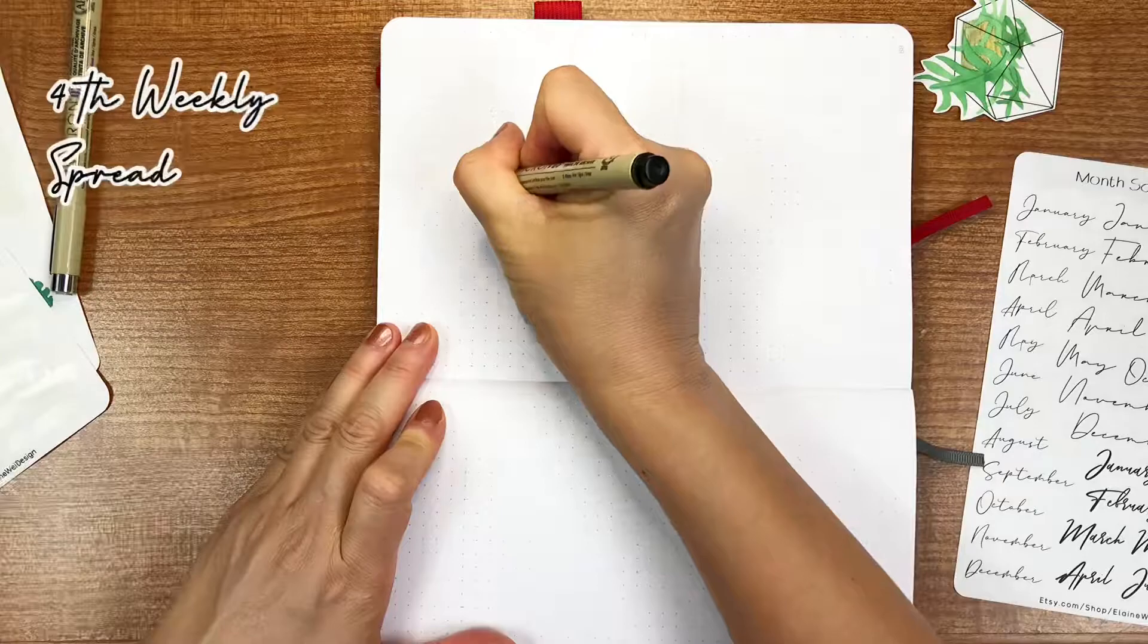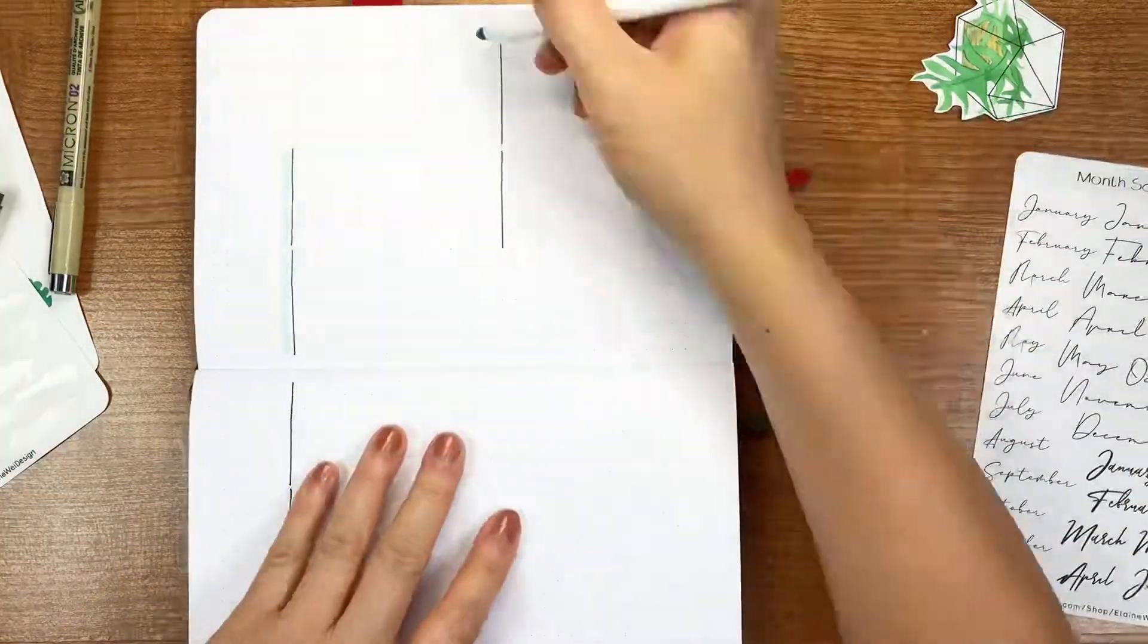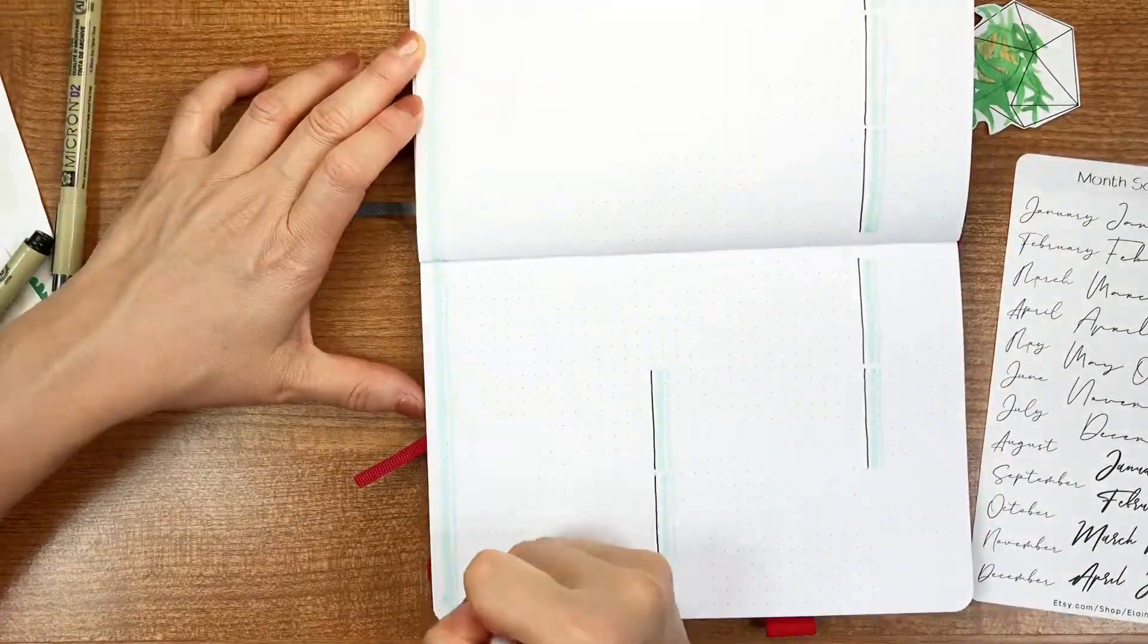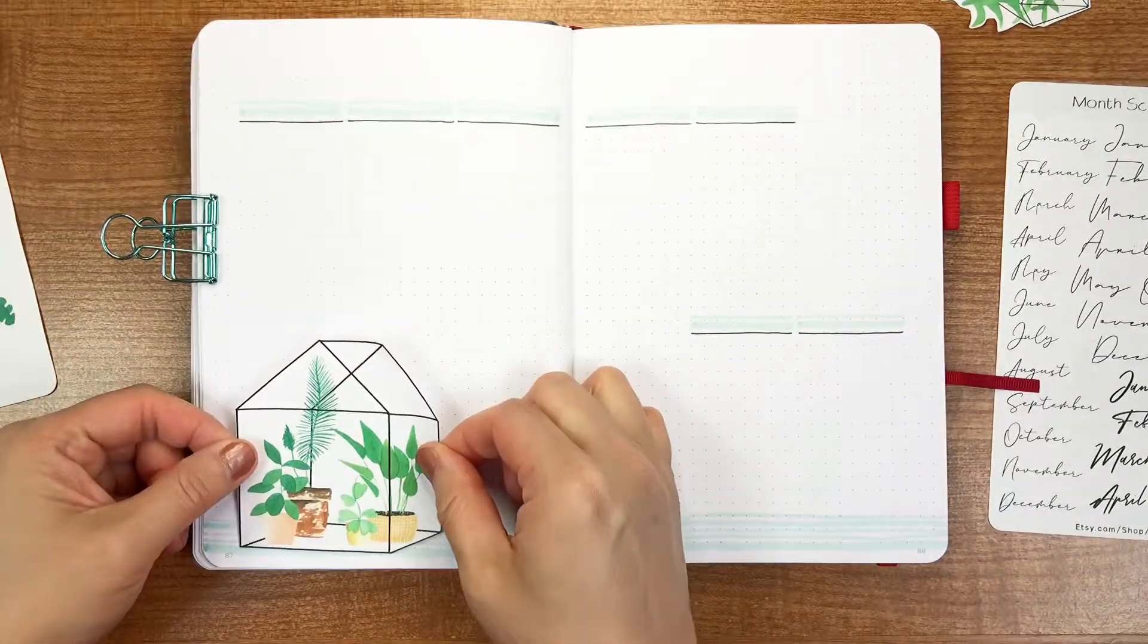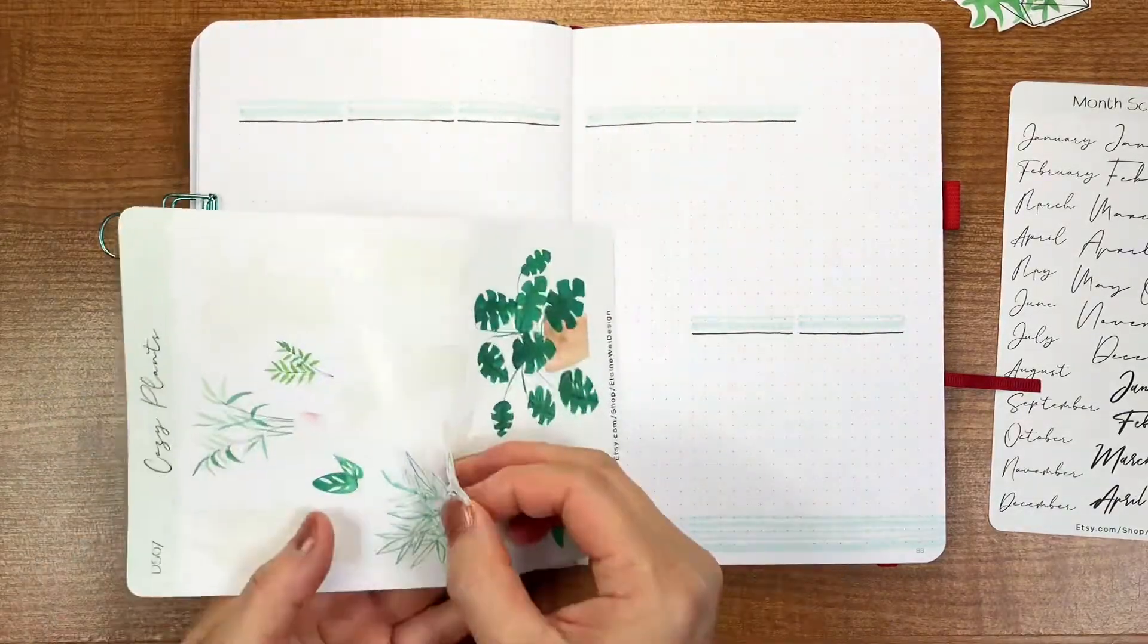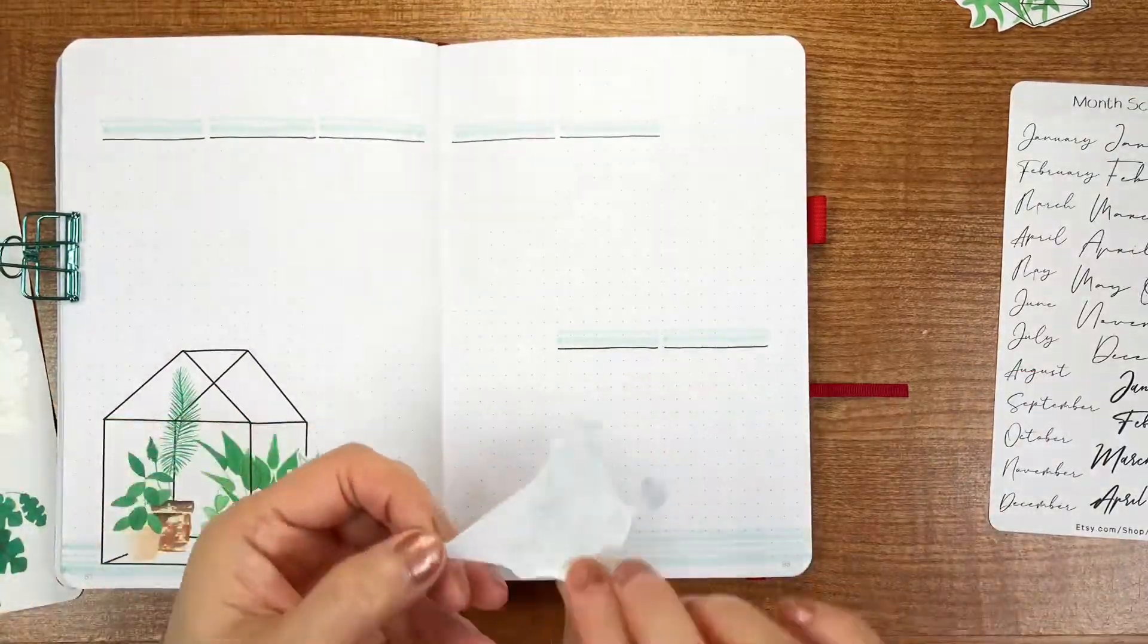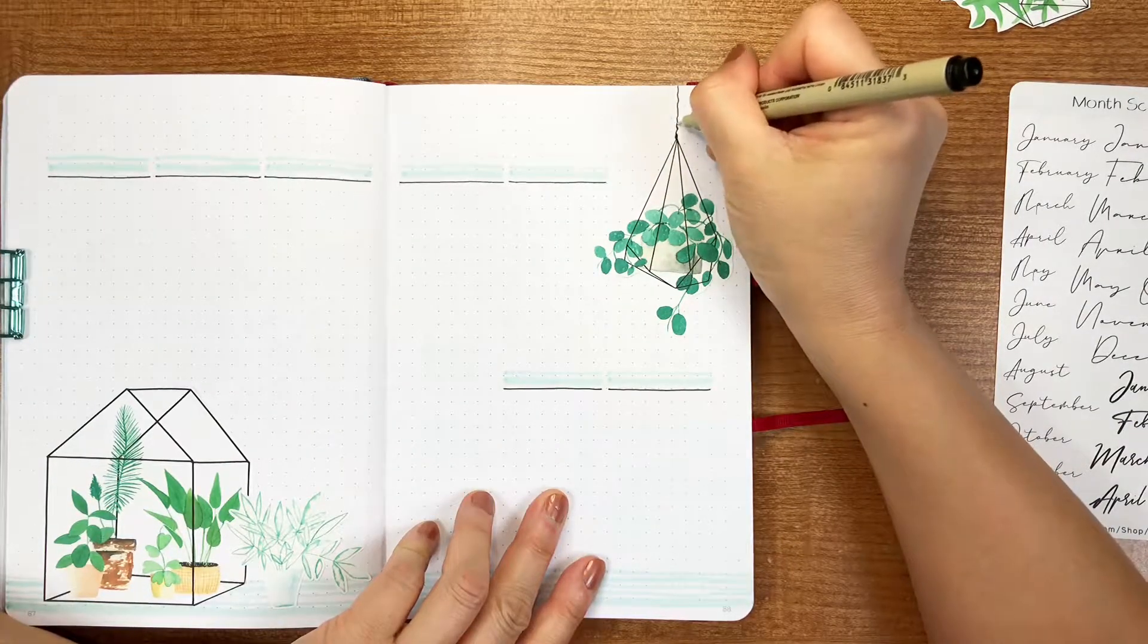Next is the fourth weekly. I wanted this layout to have an especially simple look. I really like this greenhouse sticker on the left page. And I add another sticker on the right. I'm putting this hanging plant on the upper corner of the right page. They make this weekly spread so cute, what do you think?